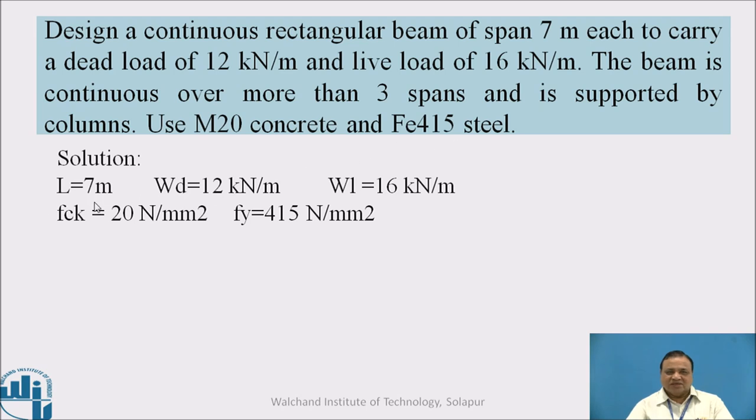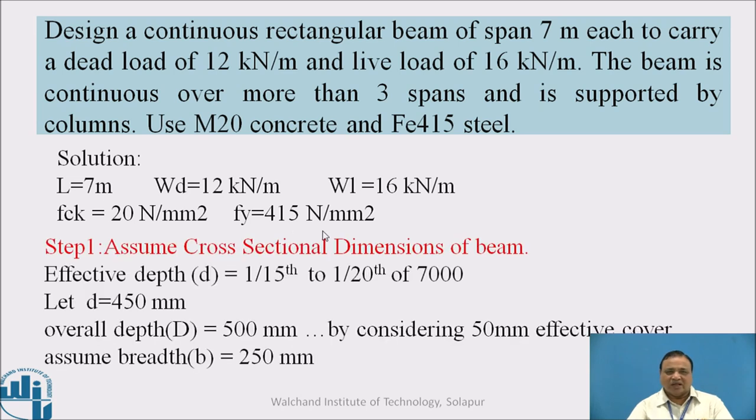So it is given: span 7 meter, WD 12 kilonewton per meter, WL that is live load 16 kilonewton per meter, FCK is 20 newton per meter square and yield strength FY is 415 newton per meter square.